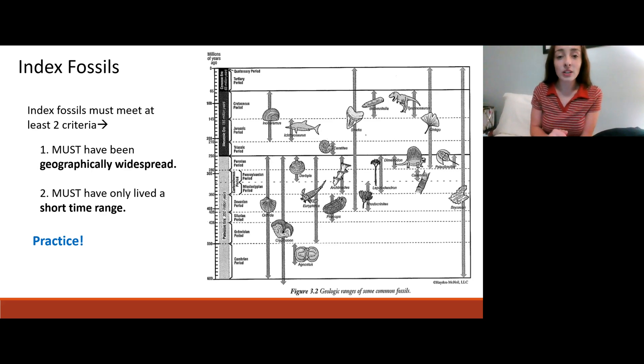So let's practice. Based on the time range alone I want you to tell me what you think would make a good index fossil and what would not. First there's this fossil called orthida. The correct answer is no, this one has a pretty long time range from the Cambrian to the Permian. Next there's this cephalopod fossil. The correct answer is yes. It has a very short time range which would make it very indicative of a certain age in the geologic record and therefore a very good index fossil.